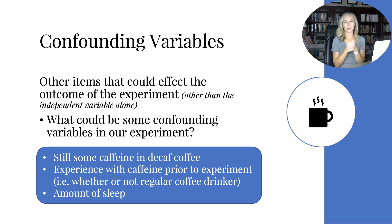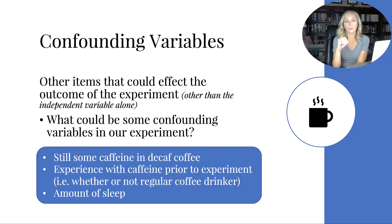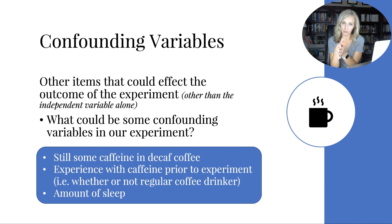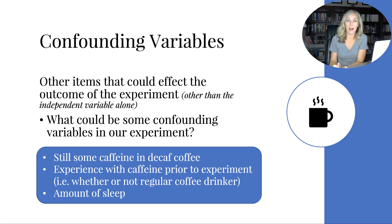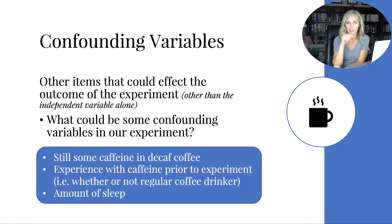That wraps up our experiment notes. I encourage you to rewind and re-watch parts of this, because it can be tricky — but don't overthink it. Simplify it: you're trying to isolate that only the independent variable is impacting your dependent variable, so you can say the independent variable caused the effect. That's the whole point of doing an experiment. We've got one more set of notes in Unit 1: Scientific Foundations, so click through the playlist and watch that final video.